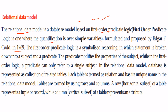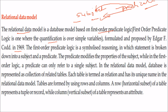In first-order predicate logic, every statement is broken into a subject and a predicate. The predicate modifies the properties of the subject. In first-order logic, a predicate can only refer to a single object — this is very important. In the relational data model, the database is represented as a collection of tables, and these tables are related. Tables are organized in the form of rows and columns, and each table is termed a relation.